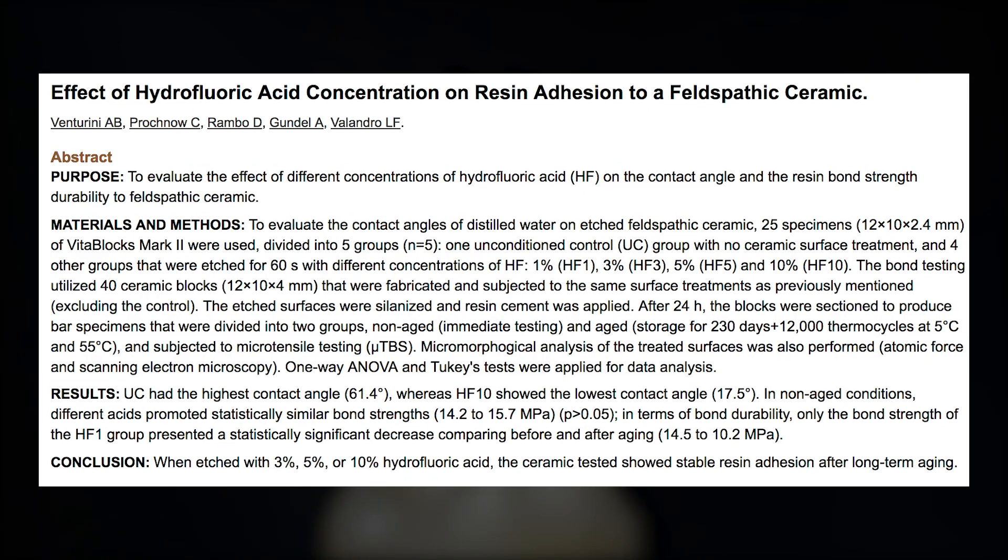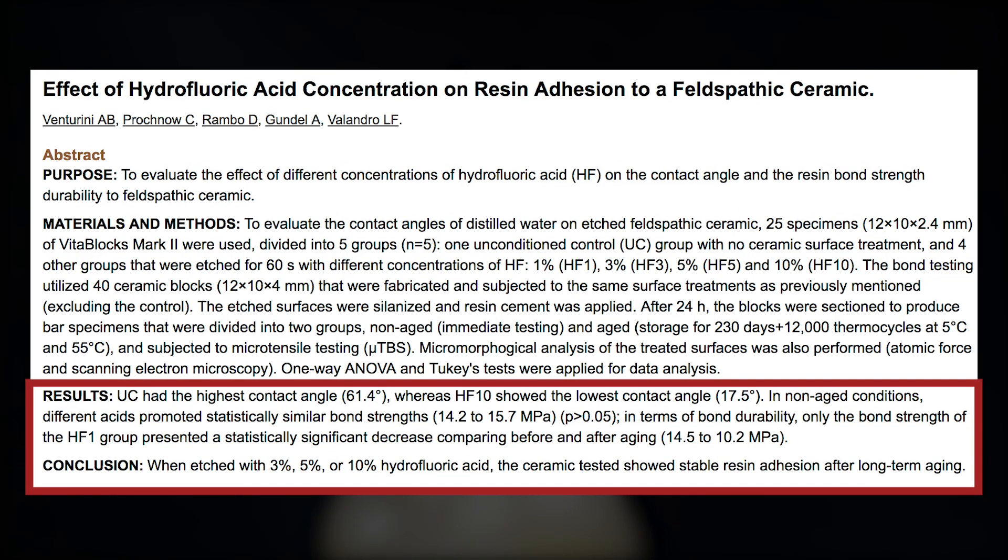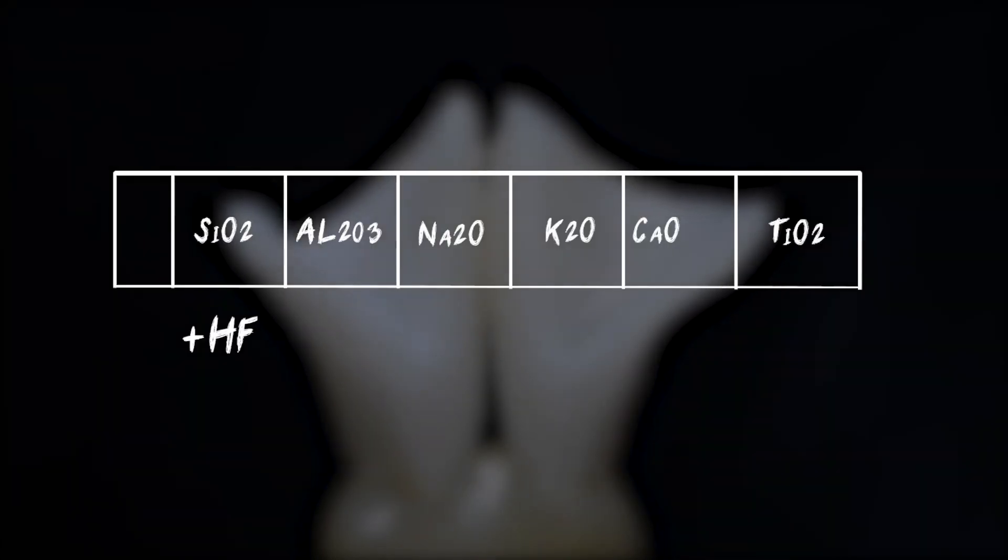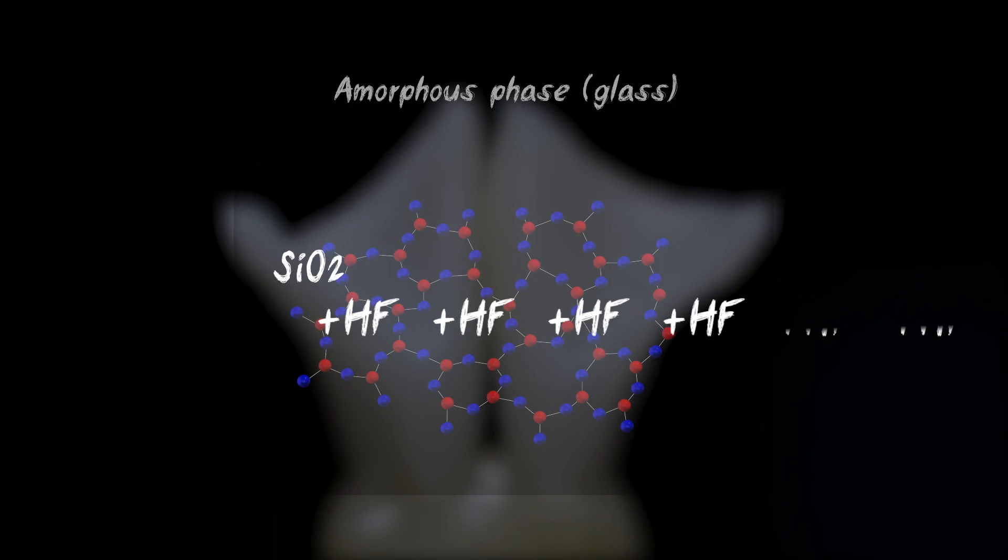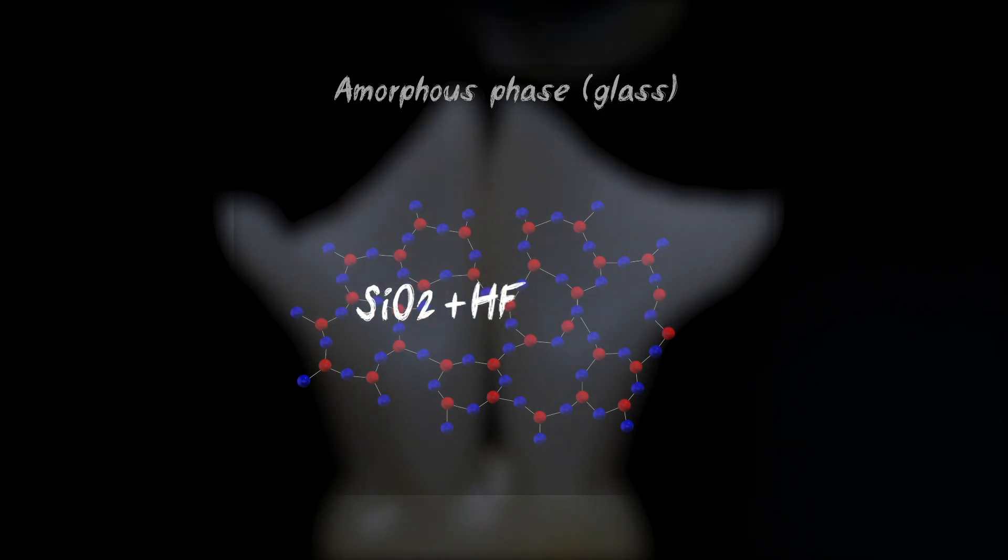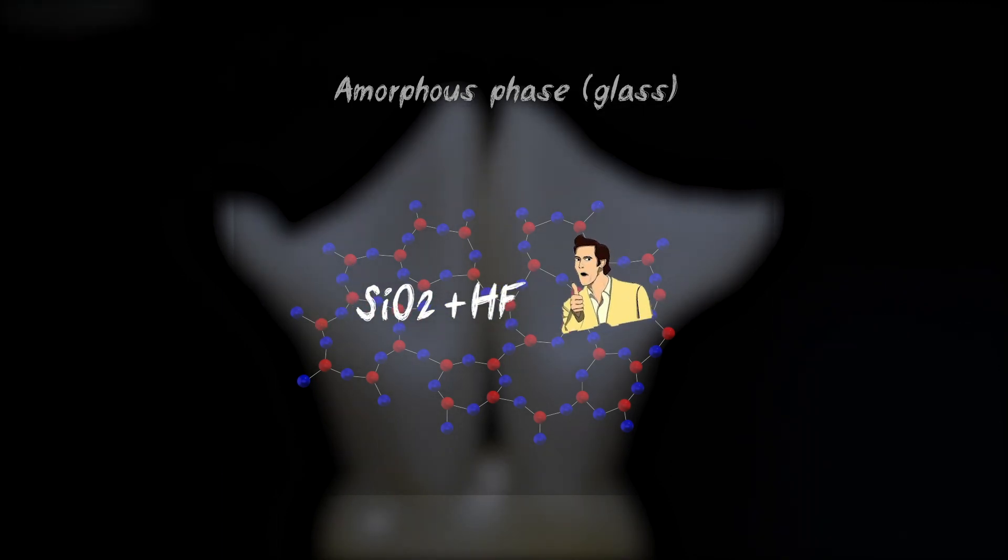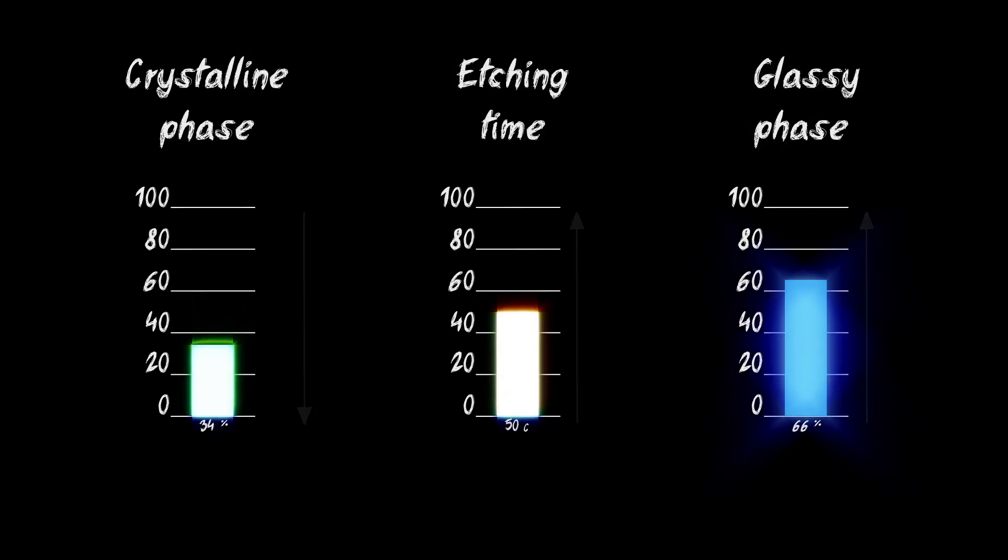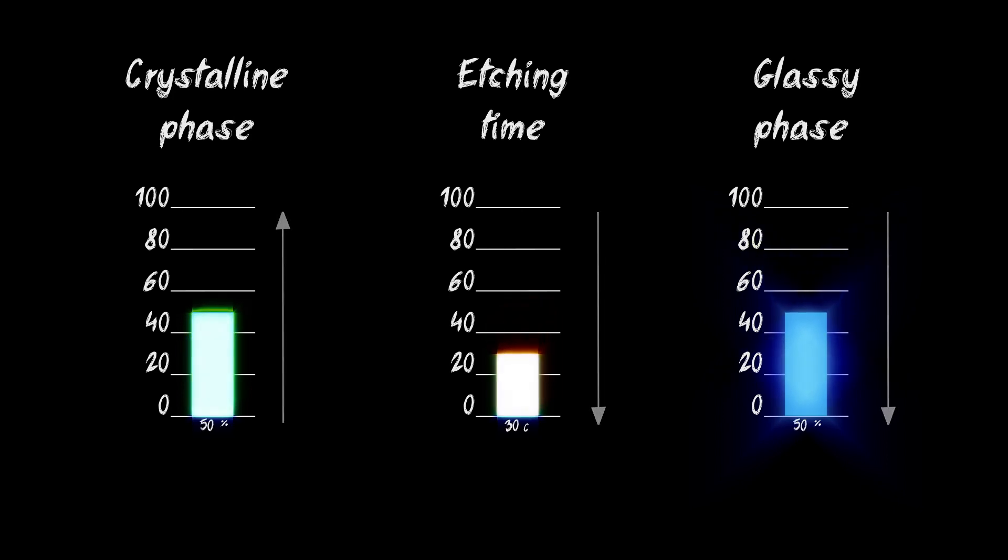In the study with feldspar ceramics, the results are approximately the same for 3, 5 and 10 percent acid. Hydrofluoric acid interacts with the entire ceramic composition at the same time. However, the glass phase is etched significantly faster than the crystals due to their different structural organization. That's why there is a difference in etching time, which is directly related to the proportion of the crystalline and the glass phase in the material.